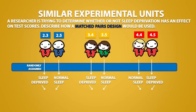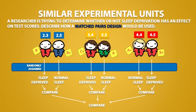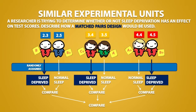Then we would compare the results for each pair, and we will also compare all of the results. For example, if we saw that the sleep deprived people were consistently getting lower test scores than the people who got a regular amount of sleep, then we can say that sleep deprivation was actually the cause for a bad test score.